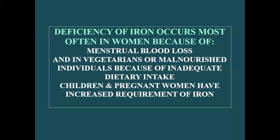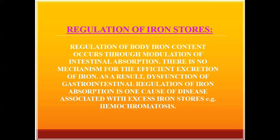Children and pregnant women have increased requirements for iron. Regulation of body iron content occurs through modulation of intestinal absorption. There is no mechanism for the efficient excretion of iron; as a result, dysregulation of gastrointestinal iron absorption is one cause of disease associated with excess iron stores — for example, hemochromatosis.